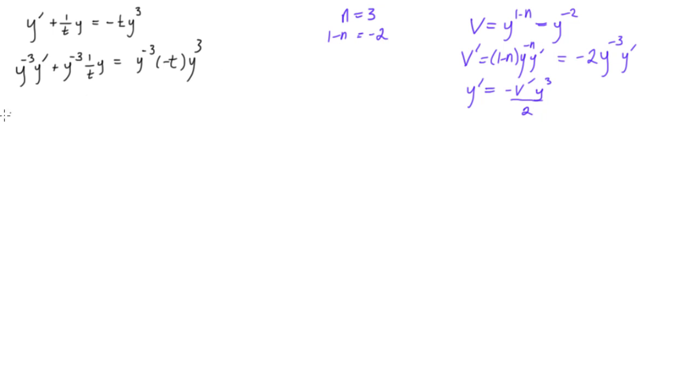Alright, so again, remember we have y prime here. Y prime is equal to all this stuff. So we can write this first term as y to the minus 3 times, well actually put the negative on the bottom, you'll see why in a second. So we have times v prime times y cubed, and this is all over negative 2. Then we get y to the power of minus 3 times y to the power of 1. So we get 1 over t times y to the minus 2. And this is all equal to minus t because these y bits are going to cancel out with each other.